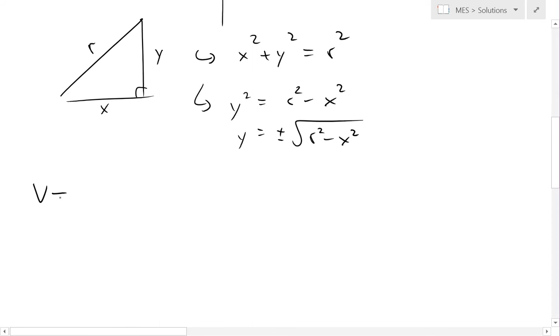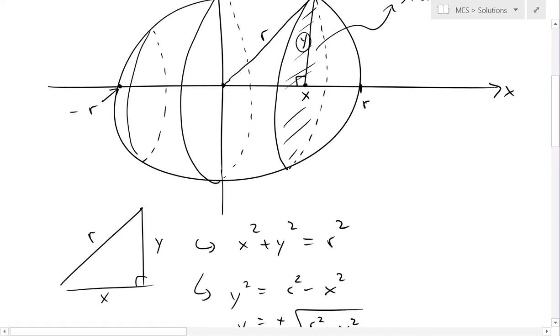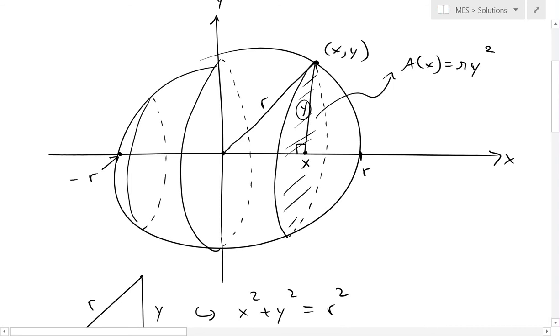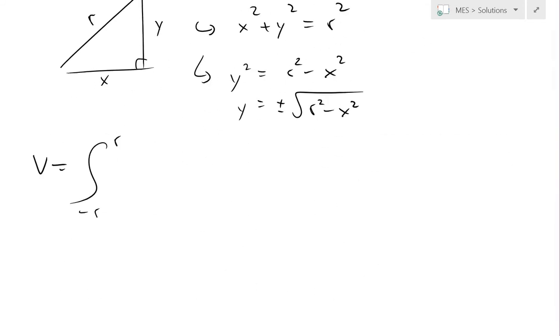So if we were to take the area of this, we know from the definition of volume, we just have to go from left of, basically from negative r to r, this is our new a to b. So basically we go from the leftmost of the shape to the rightmost, and then we take the integral of this cross-sectional area that changes with a changing y. So we put that in, so this is A of x dx.